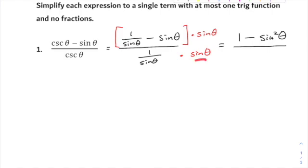And the denominator, sine times 1 over sine, hey, well that's just going to be 1. And 1 minus sine squared is what we're left with here.